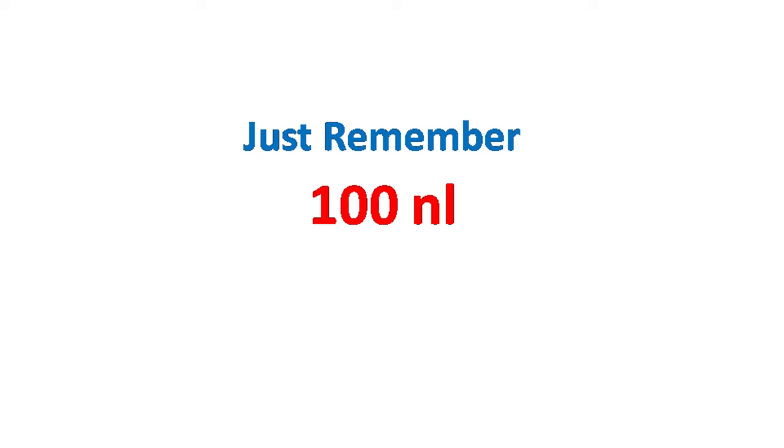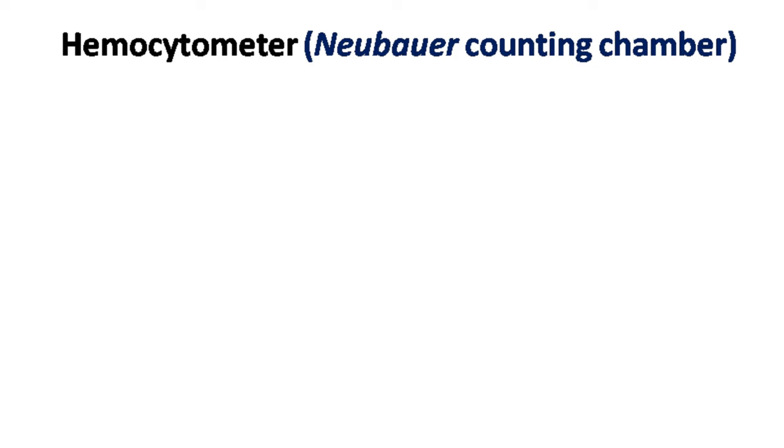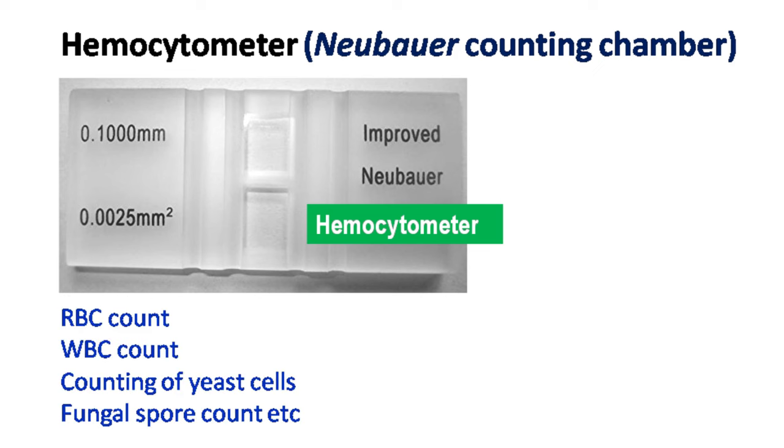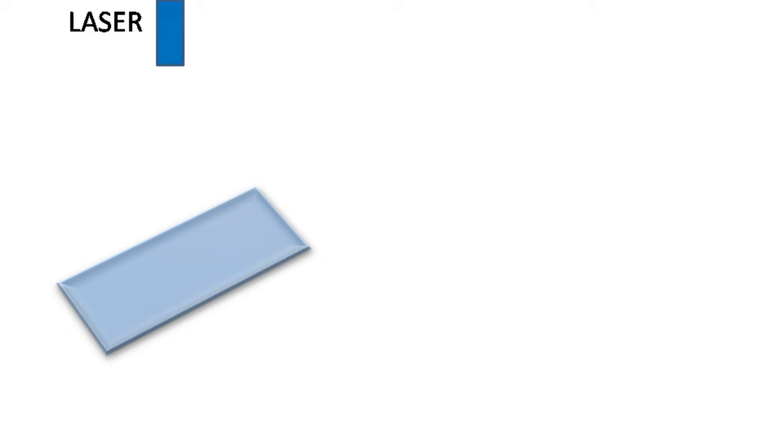And if you remember this value, 100 nanoliters, then all the calculations for hemocytometer become very easy. Hemocytometer is a specially designed glass slide used to calculate total number of cells in a liquid sample. It is widely used for calculation of total number of RBCs, WBCs, yeast cells, fungal spores, etc.